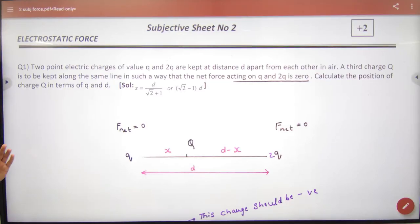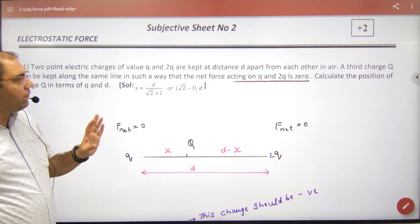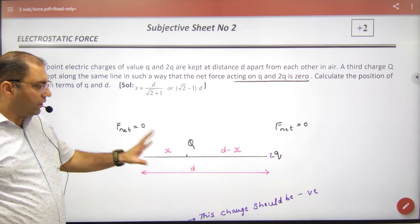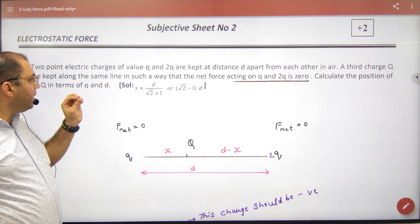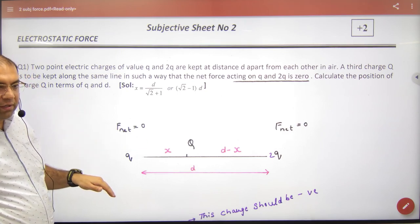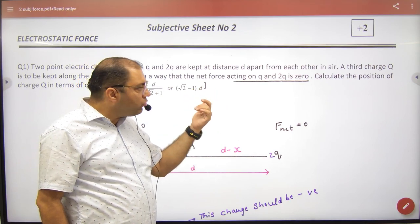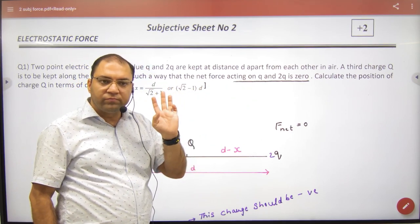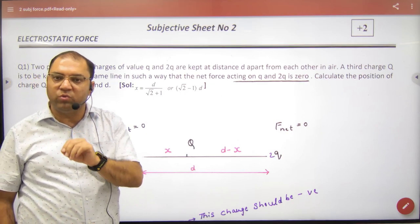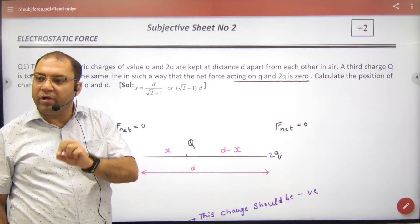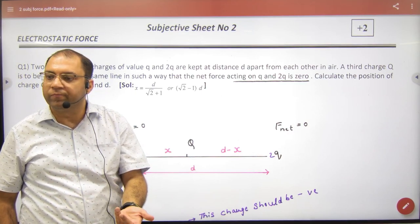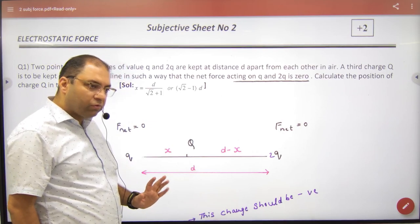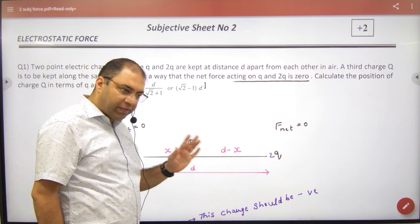Look, in this question, two point electric charges of Q and 2Q are kept at a distance of D apart. Third charge Q is to be placed in this line in such a way that net force acting on Q and 2Q is zero. I've placed capital Q here, so I need to find x. This distance is D minus x.